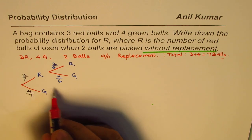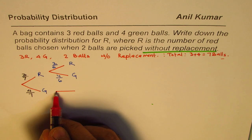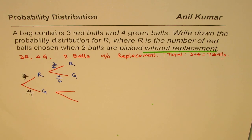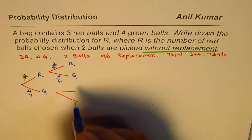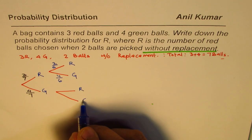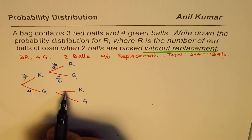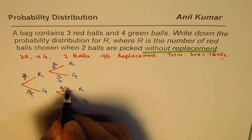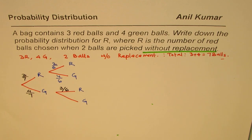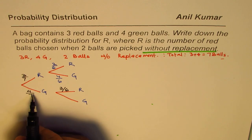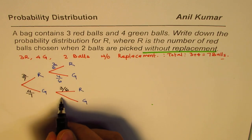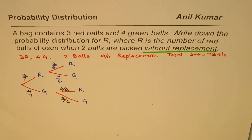Now in the second case, if you picked green first, you could get a combination of red and green. Since we picked green earlier, we still have three red balls out of six. Green has decreased by one, so it becomes three out of six. That is the tree diagram, which shows all the positions.